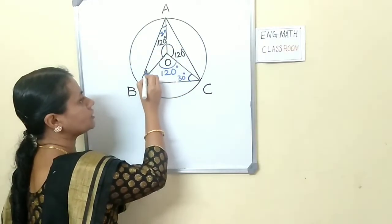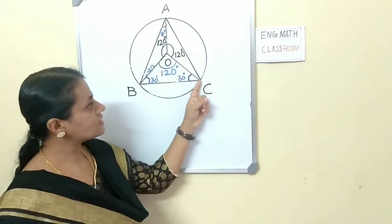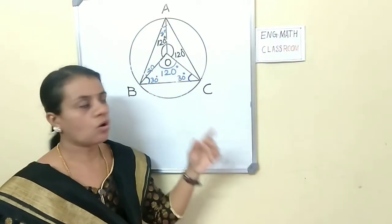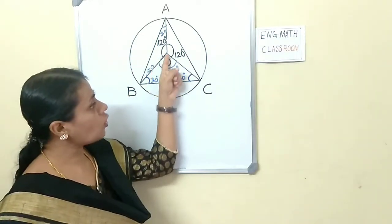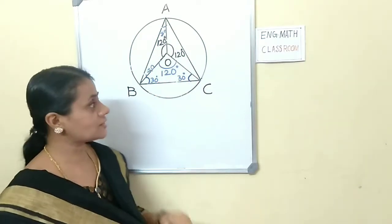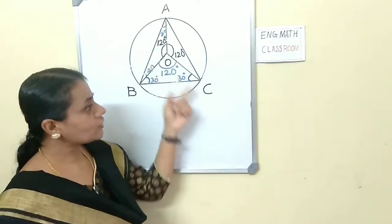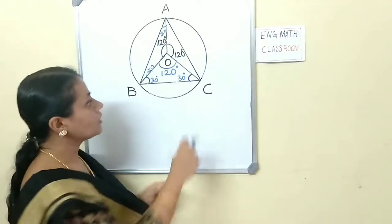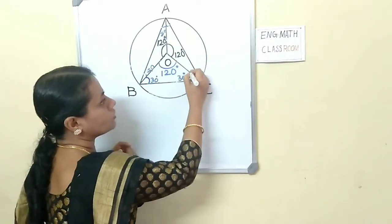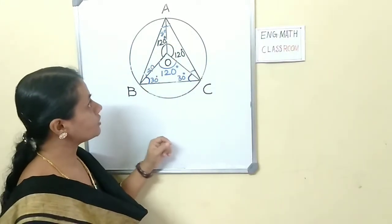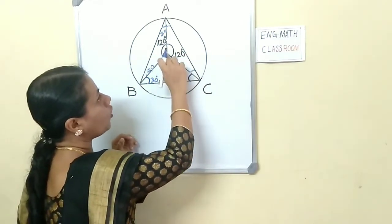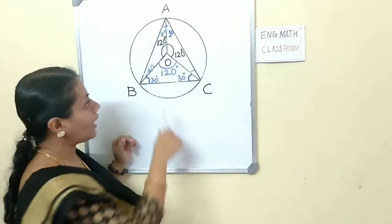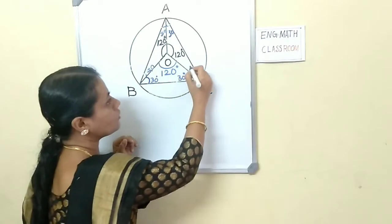Triangle OCA: OA and OC are radii of the circle, so triangle OCA is isosceles because OA and OC are equal. Angles opposite equal sides are equal, so angle OAC and angle OCA are also equal. Using the same method, angle OAC is 30 degrees and angle OCA is also 30 degrees.